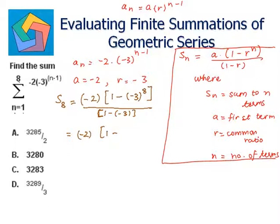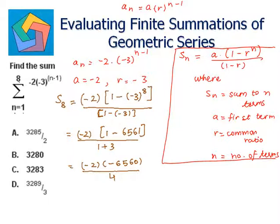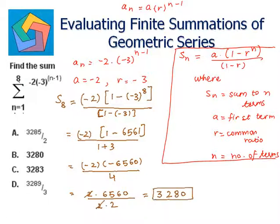3 raised to the power 8 is 6561, over 1 plus 3, which is 4. This equals negative 2 times (1 minus 6561) which is negative 6560, divided by 4. The negatives resolve to give positive 2 times 6560 divided by 4, which simplifies to 32,6 giving the answer.